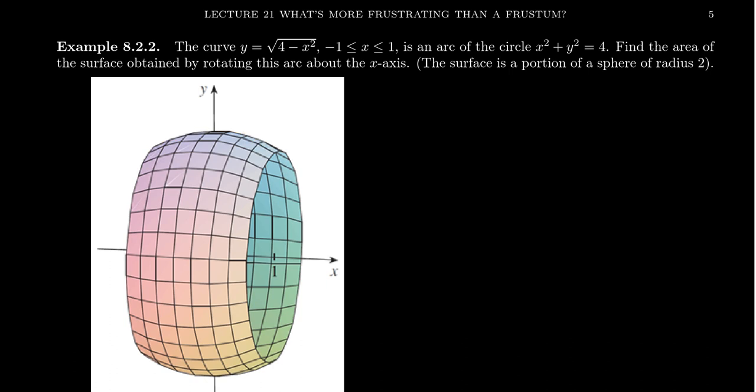So we want to find the surface area of this ring that we form by rotating the arc of the circle associated to x squared plus y squared equals 4. That's what we're trying to do right here. Now, be aware that this image here is taken courtesy of James Stewart's calculus textbook.